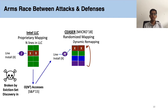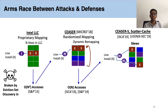Caesar, in 2018, proposed randomized mapping of addresses to sets and dynamically changing this mapping before an eviction set can be discovered. While this prevents previous eviction set discovery algorithms, new attacks were shown to discover eviction sets faster in order of n accesses before Caesar can complete its remapping, thus breaking its defense. Subsequent defenses increased the level of obfuscation with multiple randomizing functions, one per partition or skew, mapping new addresses probabilistically in one of these skews. While this made exact eviction set discovery harder, new attacks showed that probabilistic evictions could nevertheless still be discovered.